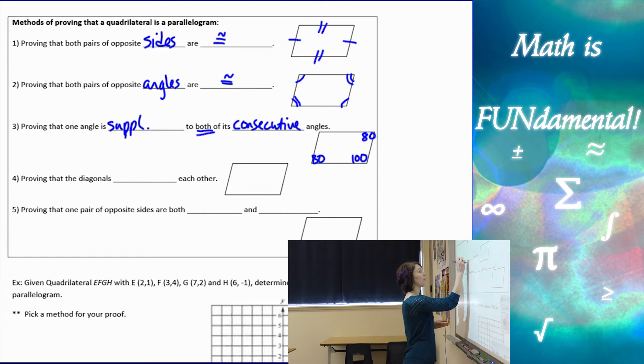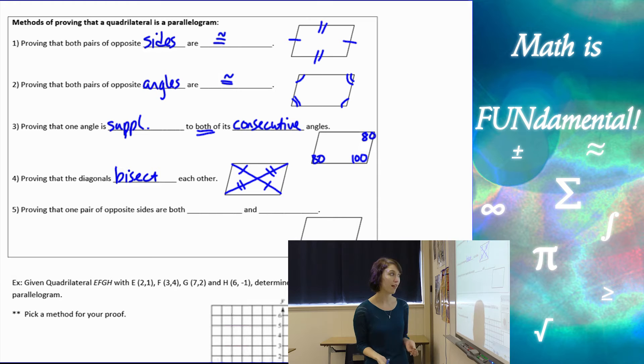The fourth method is proving that the diagonals bisect each other, just like that fourth property. Now notice we only have four properties of parallelograms, but we have five ways to prove that a quadrilateral is a parallelogram. This fifth one is really cool, and I'm going to show you how it works.